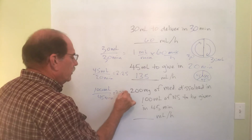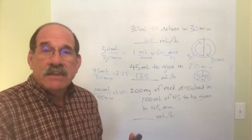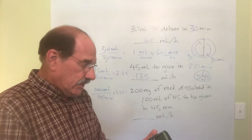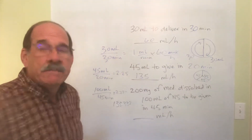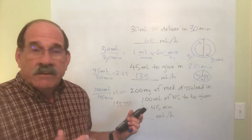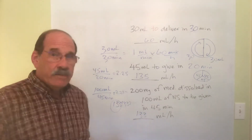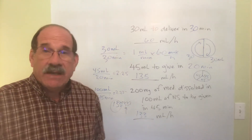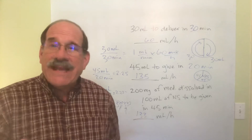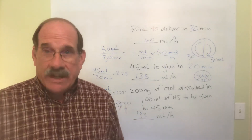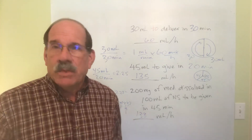That 2.2222 is milliliters per minute. Multiply by 60 to convert to milliliters per hour. The answer is 133.333 repeating. For all IV problems, round to the nearest whole number. Since the digit after 133 is 3, which is less than 5, I leave it as 133 milliliters per hour. That's how you handle any IV infusion that's less than one hour — divide milliliters by minutes, then multiply by 60.